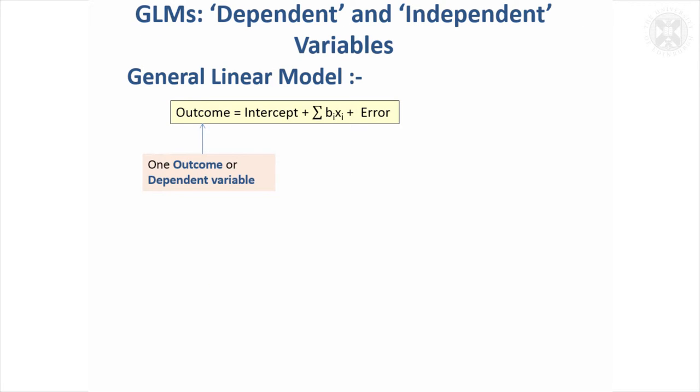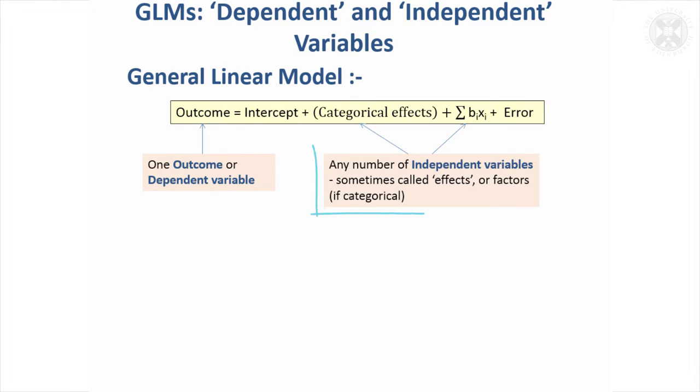This slide really just highlights some of the terminology. You always have one outcome in general linear model. There's one thing you're trying to analyze and that will be called an outcome or a dependent variable. And then everything on this side is called an independent variable or sometimes these are called the effects in the model. Sometimes when people write up publications they talk about these as the independent effects or independent variables or effects in the model.